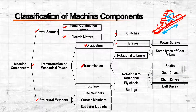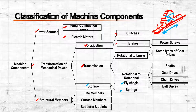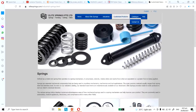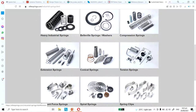We also have mechanical components related to storage of energy, such as flywheels and springs. In an internal combustion engine, a flywheel is attached to one end of the crankshaft to maintain rotational energy. Springs are also common in suspensions and many types of equipment, and there are many types of springs.